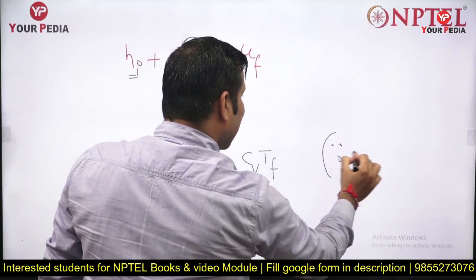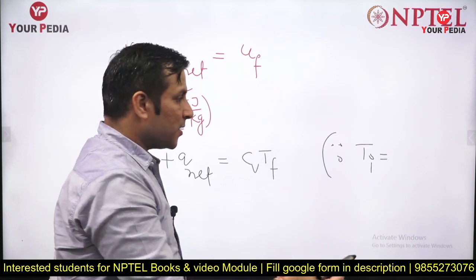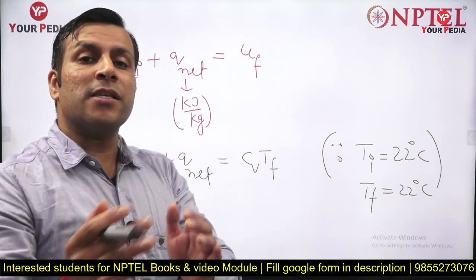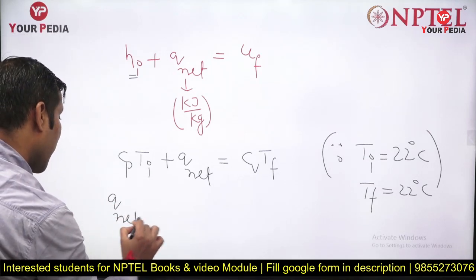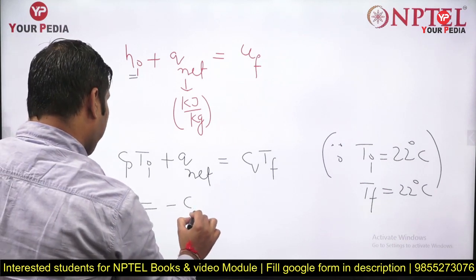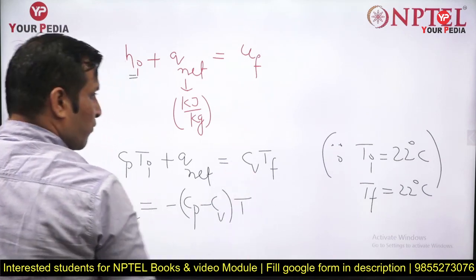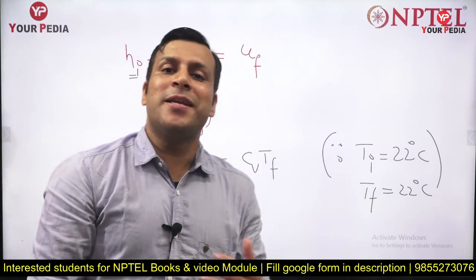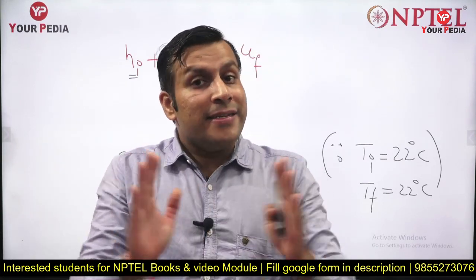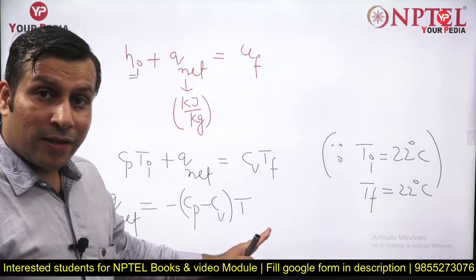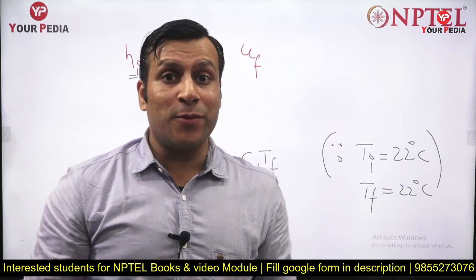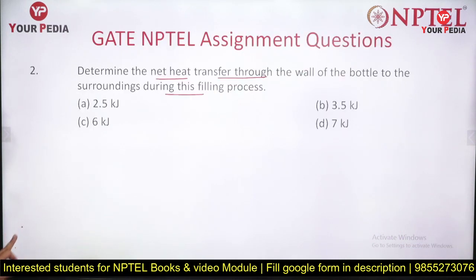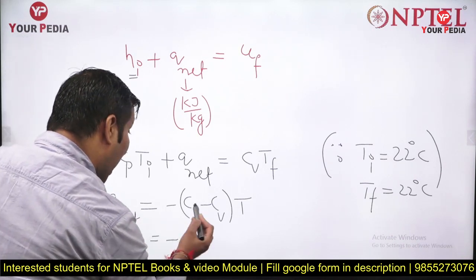Substituting: Cp·Ti + Q_net = Cv·T_final. Since both temperatures are equal (both = T), rearranging gives Q_net = Cv·T minus Cp·T = -(Cp - Cv)·T = -R·T. The negative sign indicates net heat transfer is from system to surroundings. Q_net per unit mass = -R·T = -0.287 × 295.